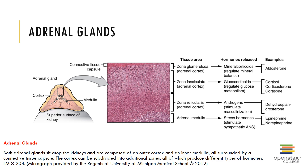The adrenal medulla releases hormones when the body is under stress and consists of hormone-producing cells called chromaffin cells. Epinephrine elevates blood sugar, regulates the body during stress or anger, raises blood pressure and heart rate, promotes glycogen breakdown, and increases all other sympathetic effects of the nervous system. Norepinephrine helps maintain blood pressure and accounts for about 20% of the hormones released by the adrenal medulla.